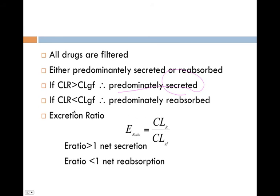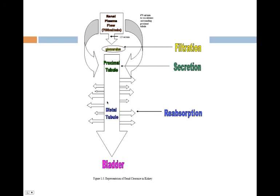And if our renal clearance is less than our filtration clearance, so if our filtration clearance is greater than what actually makes it out, then the predominant process has to be reabsorption because more of the drug is being reabsorbed than is being filtered.